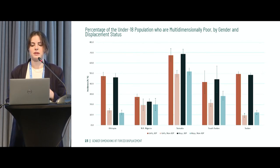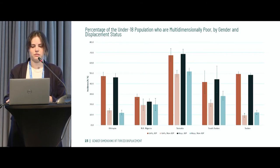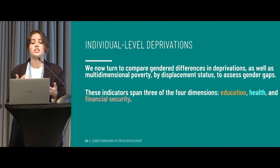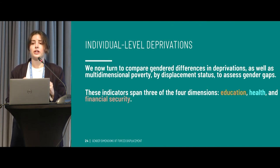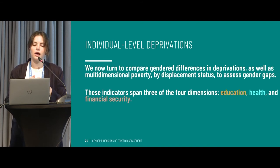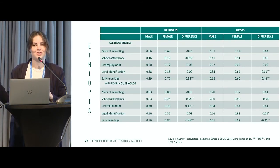This graph shows the same key statistics but zooming into the child population — anyone under 18 years. The results look pretty similar to the overall population. Now comparing gender differences in deprivations — assessing the gender gaps in each of the individual indicators — the indicators for which we had individual-level information spanned three of the four dimensions: education, health, and financial security.